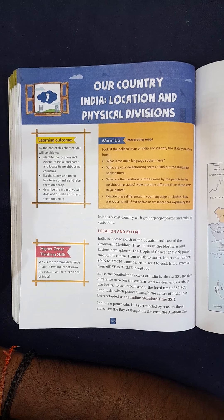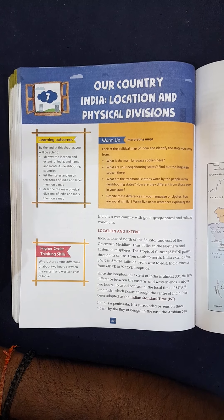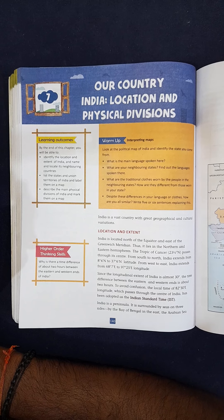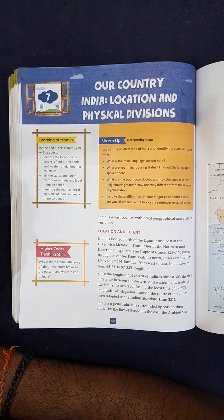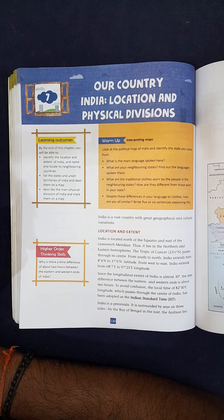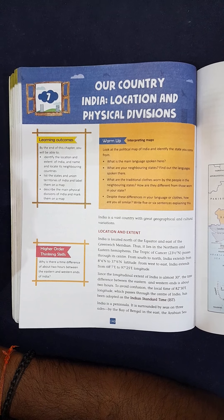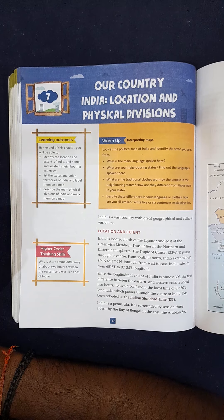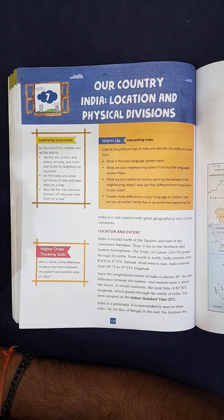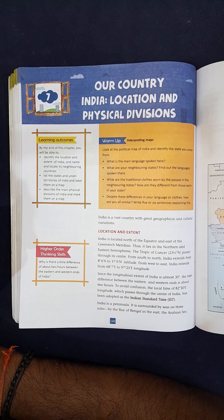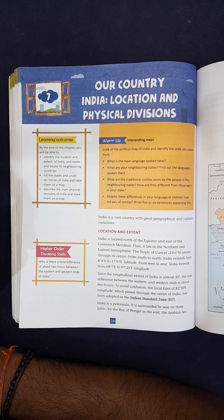Greenwich is situated near England. The Tropic of Cancer at 23 and a half degrees north passes through India from west to east. India extends from 8 degrees 4 minutes north to 37 degrees 6 minutes north latitude.